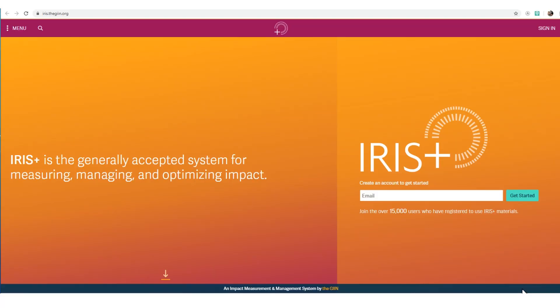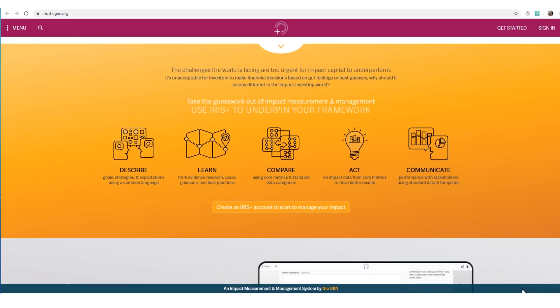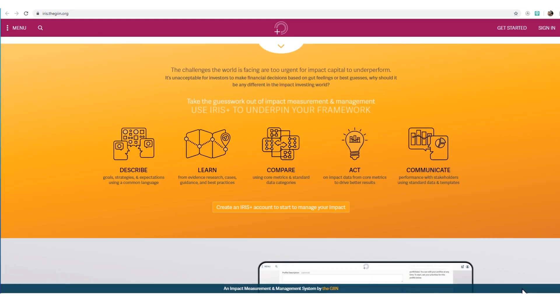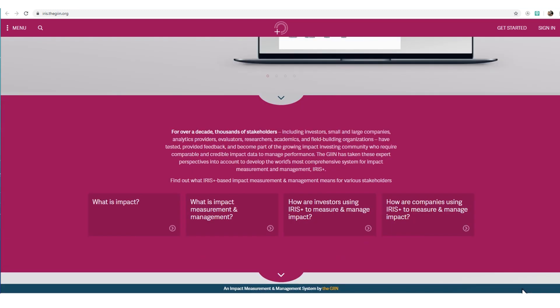Unfortunately, I can't give you an answer to the first question because it depends on your business model, but I can help with another. You can use IRIS system for measuring, managing and optimizing impact. This standardized system offers a broad range of metrics that can be adapted to suit the needs of your startup.